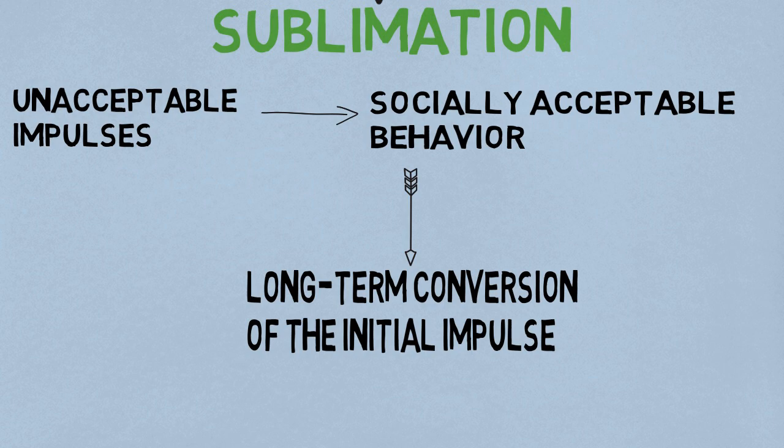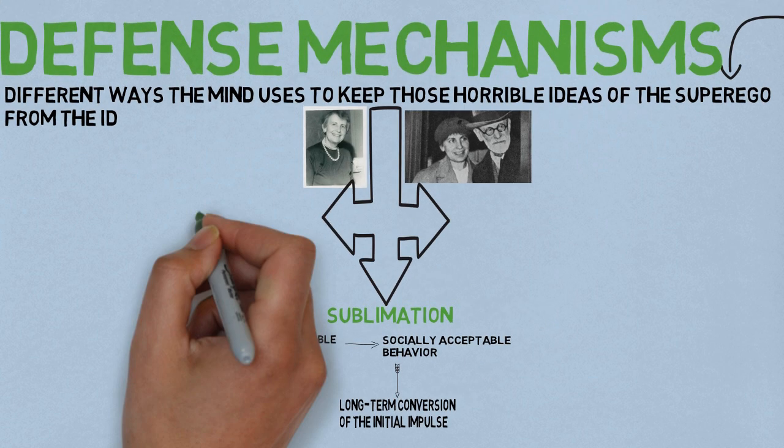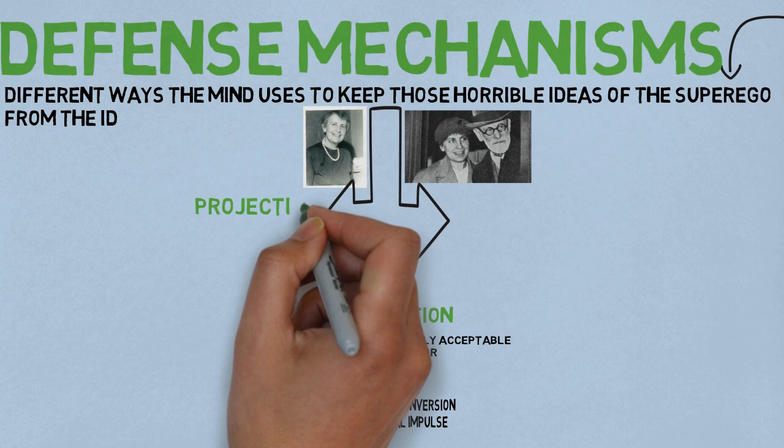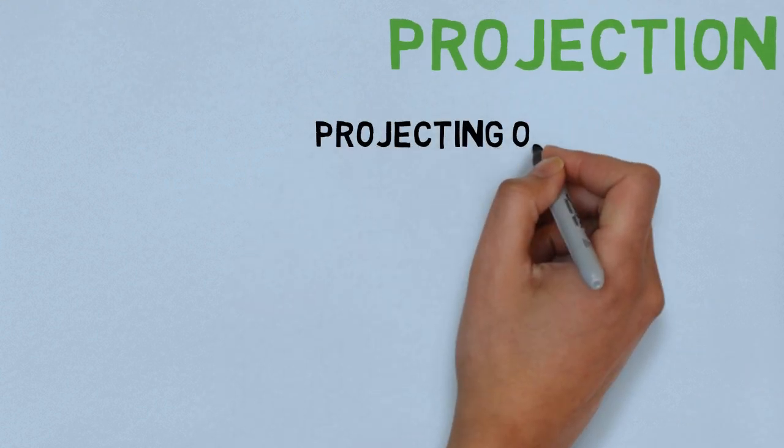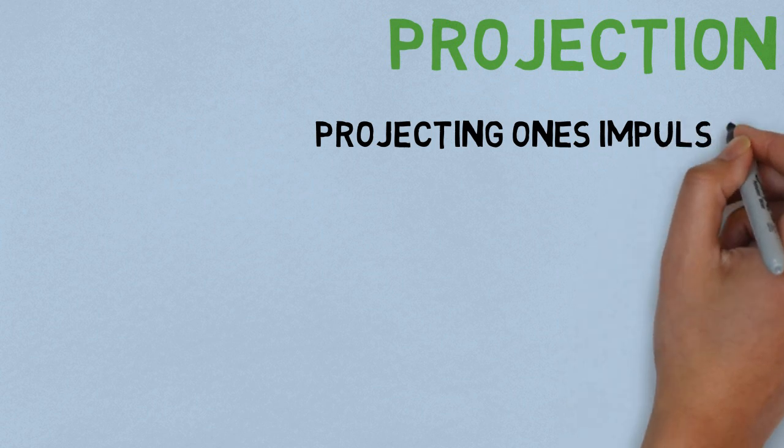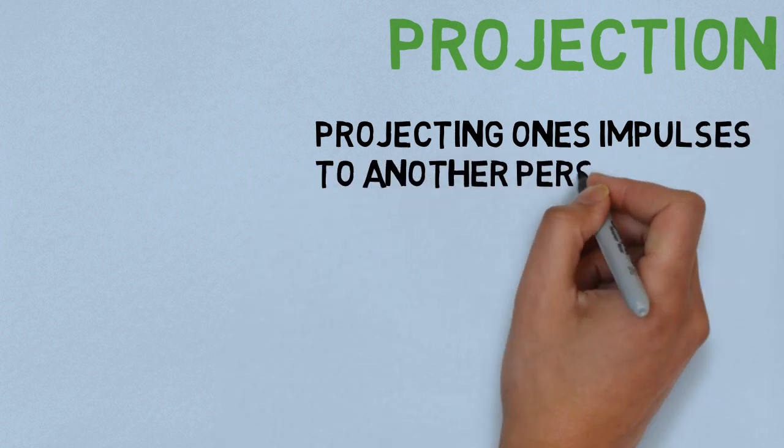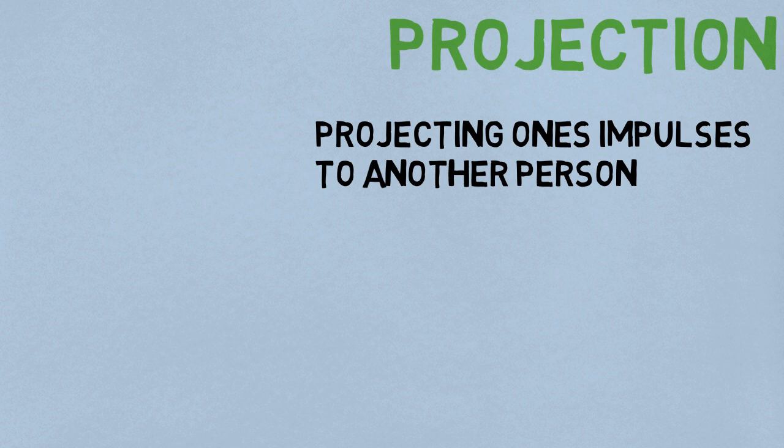Another one is projection, which is projecting one's impulses, uncomfortable, unacceptable thoughts, feelings, or motives to another person. For instance, you might hate someone, but your superego tells you that such hatred is unacceptable. You can solve the problem by believing that they hate you.